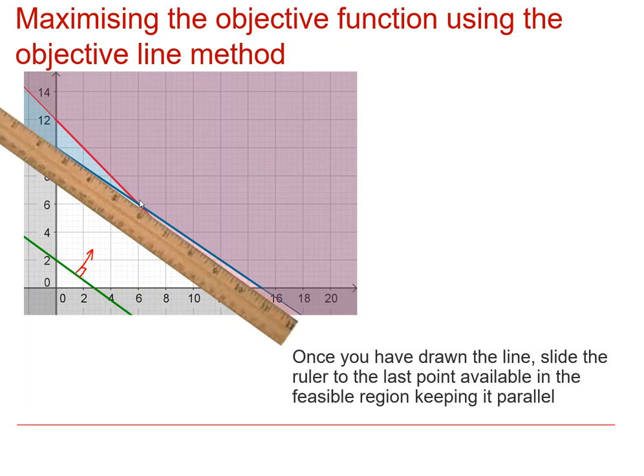And what we see then is that we're left with that point there, which is 6, 6. And that was actually the same point that we found earlier, wasn't it, in the previous video using the vertex method. But we haven't really had to consider any of the other vertices there, other than the fact that they just naturally disappear as I move that ruler up the graph.